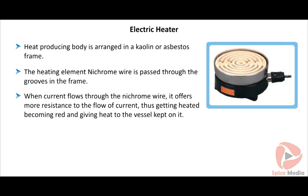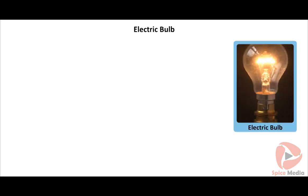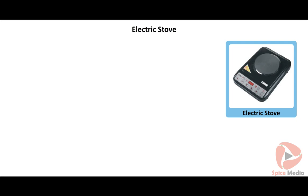Now let us learn the working of an electric bulb. An electric bulb has a spherical glass bulb containing inert gases at low pressure. A tungsten filament is in the form of a spring with leads. When current is passed through the filament, it gets heated up, becomes red-hot, and emits heat and light. We are also going to learn about the electric stove, which is used for cooking, boiling milk, water, etc.